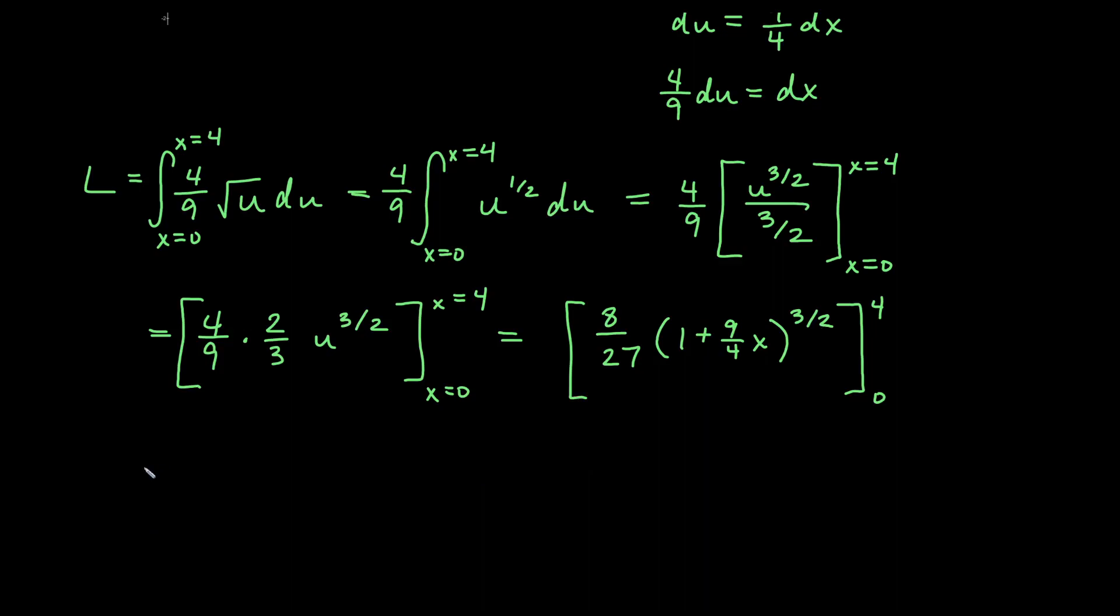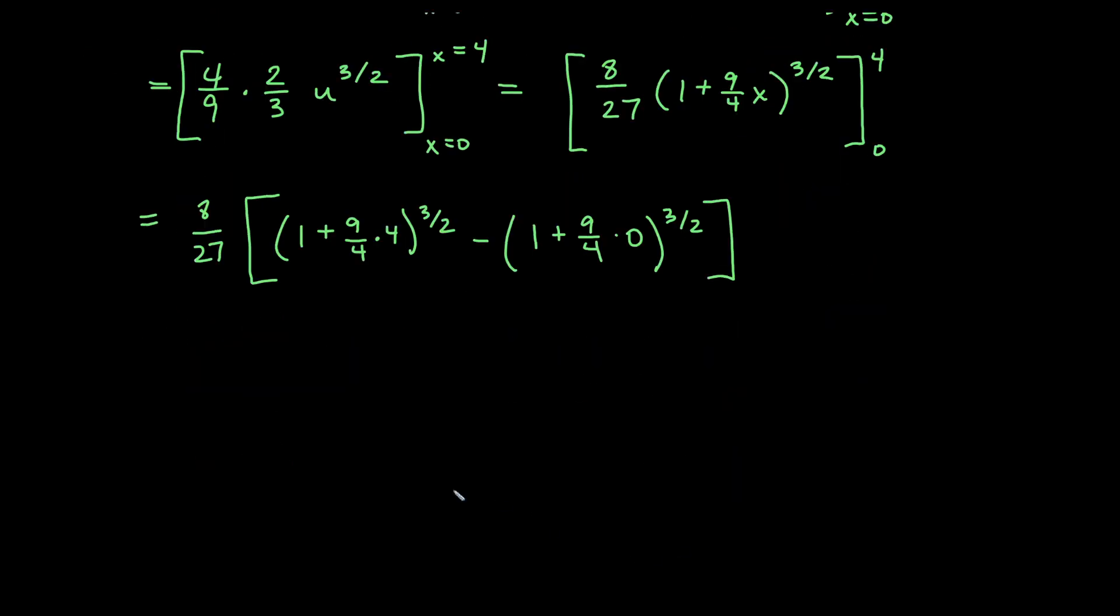When we do this and we plug in, we'll have to remember 3 halves power. So the bottom here means square root, the top means cubed. So first thing we'll do is we'll go ahead and say 8 over 27. If I plug in the 4, then that will give me 1 plus 9 over 4 times 4 to the 3 halves minus 1 plus 9 over 4 times 0 to the 3 halves. And now we need to just do some arithmetic here.